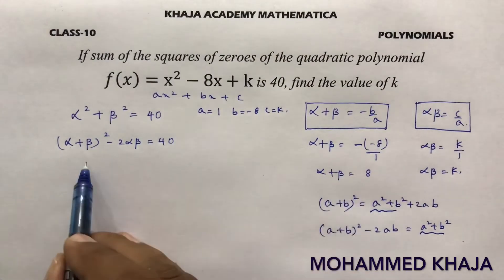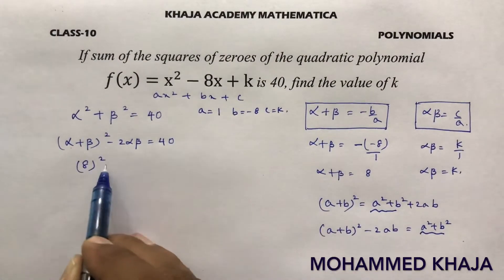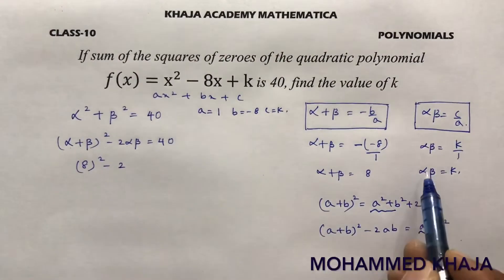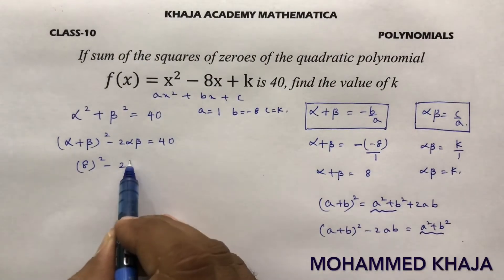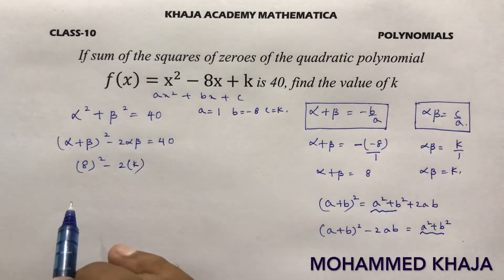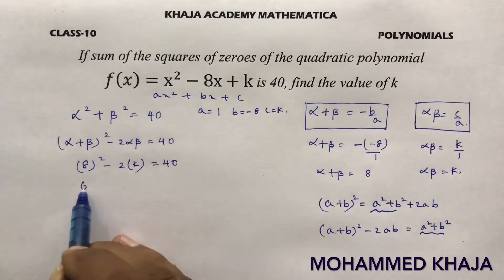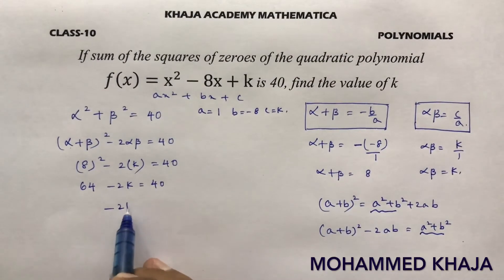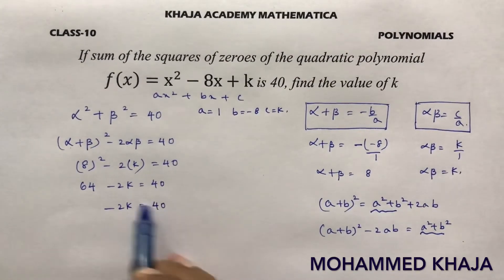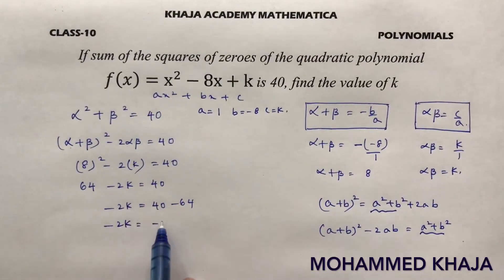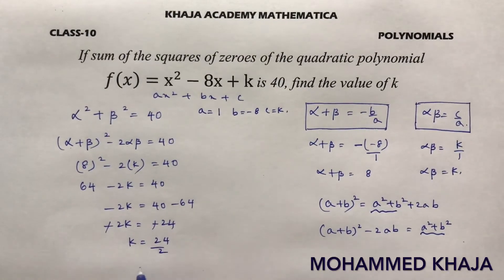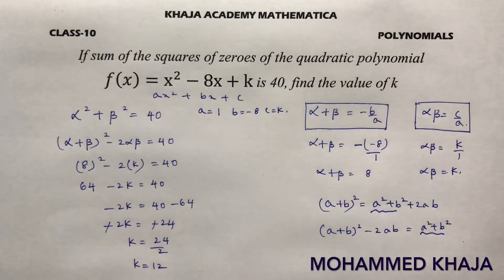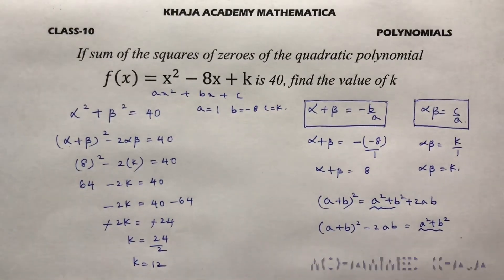Alpha + beta value is 8. 8² - 2 * alpha * beta, which is nothing but k, equals 40. So 64 - 2k = 40. If I transpose this, -2k = -24, k = 24/2, k = 12. The value of k is 12.